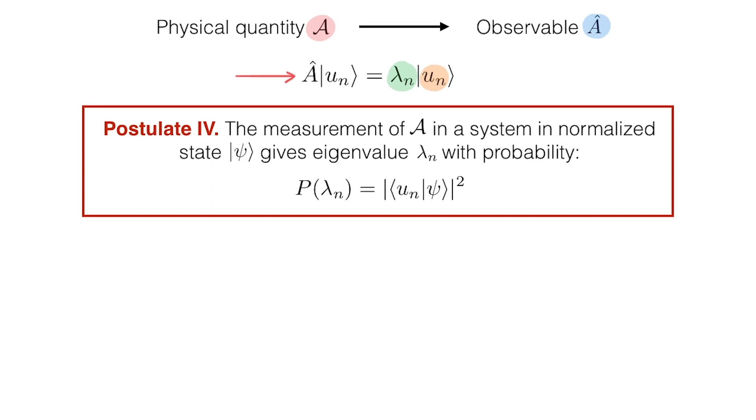Postulate 4 of quantum mechanics, discussed in the videos on measurements, tells us that when we measure A-hat in a system in state psi, then the outcome of that measurement is an eigenvalue lambda n of the operator A-hat, and I will get that result with the probability P given by the absolute value squared of the bracket between the eigenstate u n associated with the eigenvalue we measure and the state psi.